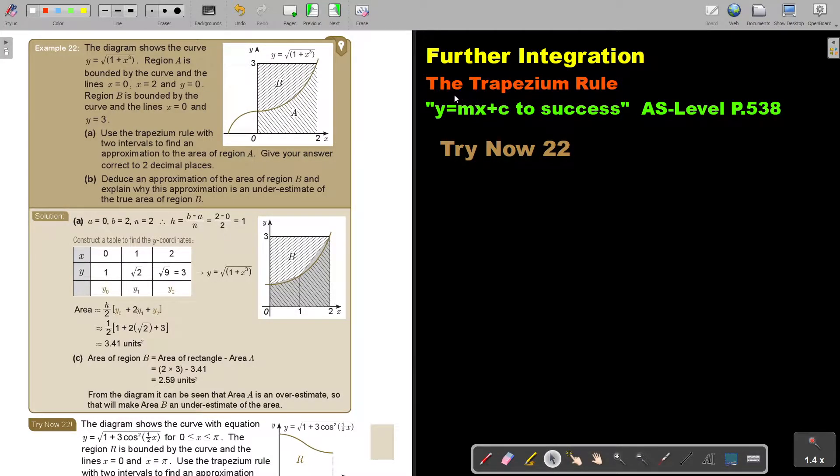In this video, we will continue with the trapezium rule. You will find this on page 538 in the Namibia AS level mathematics textbook y equals mx plus c to success.